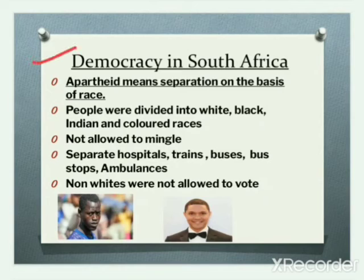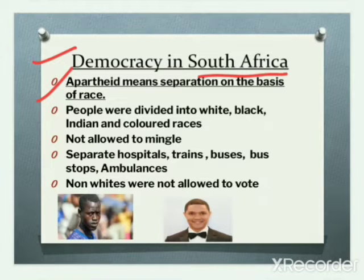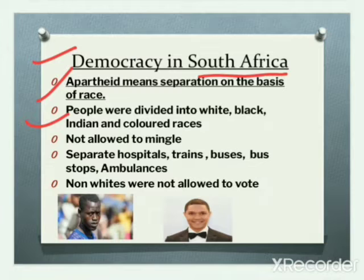Democracy in South Africa: South Africa was earlier governed by the apartheid law. Apartheid means separation on the basis of race — discrimination was made on the basis of skin color. People were divided into white, black, Indian, and colored races.